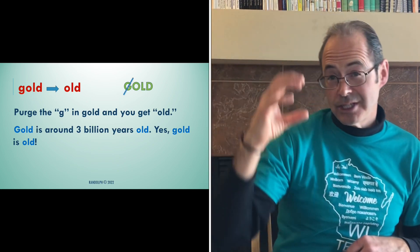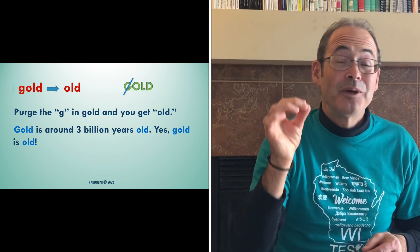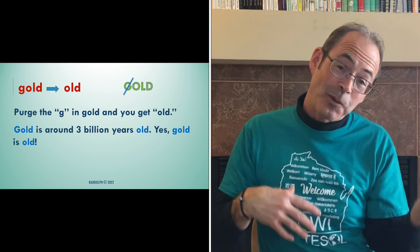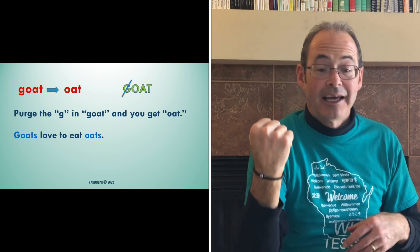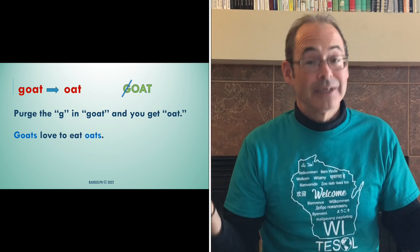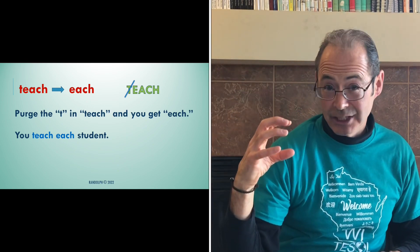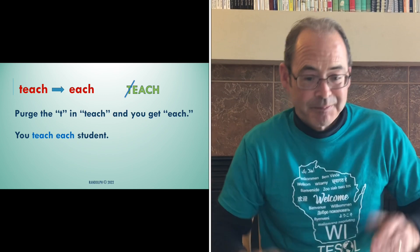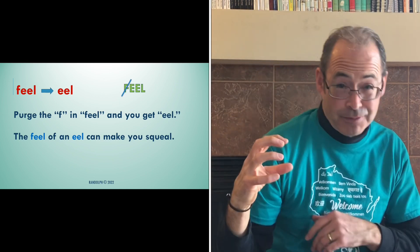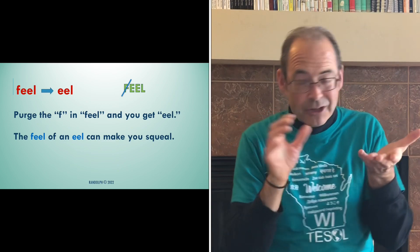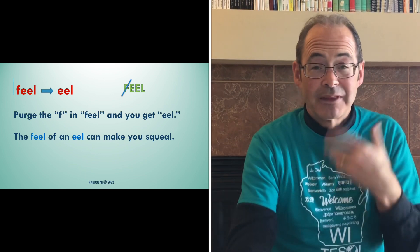'Gold' and 'old': you purge the G in 'gold' and you're left with 'old.' Gold is around 3 billion years old, so yes, gold is actually old. Another neat one is with animals: 'goat' and 'oat.' Purge the G in 'goat,' and you're left with 'oat.' Goats love to eat oats. And for us teachers out there, a neat one is 'teach' and 'each.' Purge the T in 'teach,' and you're left with 'each.' You teach each student. 'Feel' and 'eel' — you take the F off of 'feel,' and you're left with the slithering creature 'eel.' The feel of an eel can make you squeal. In teaching these, you can find connections even with visceral things like that.